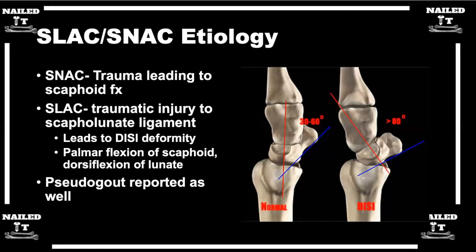One of the easiest things when understanding this DISI deformity is a brief breakdown of the mechanics of the proximal row. The easiest way to think about it is the scaphoid is always trying to flex — that's what it wants to do. The STT joint is volar, so the compressive forces push it volar. The scaphoid has to flex to get out of the way with radial deviation. If you just think about the scaphoid flexing, you're halfway to figuring out any deformity.